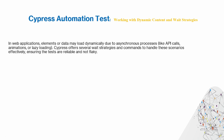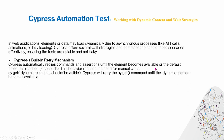Ensuring tests are reliable and not flaky. First, there's Cypress's built-in retry mechanism. Cypress automatically retries commands and assertions until the element becomes available or the default timeout is reached. The default is four seconds. This behavior reduces the need for manual waits — for example, it will try as many times as needed until the dynamic element becomes available, or until four seconds have passed.